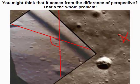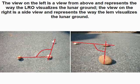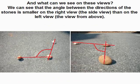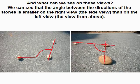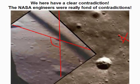You might think this comes from the difference of perspective — but that is precisely the problem. Three stones have been placed on the ground to symbolize the lunar holes. The view from above represents how the LRO visualizes the lunar ground; the side view represents how the LEM visualizes it. We can see that the angle between the directions of the stones is smaller on the side view than on the top view. This means the perspective of the LEM camera should make the angle smaller on the Apollo view than on the LRO view — instead it is greater. We here have a clear contradiction.